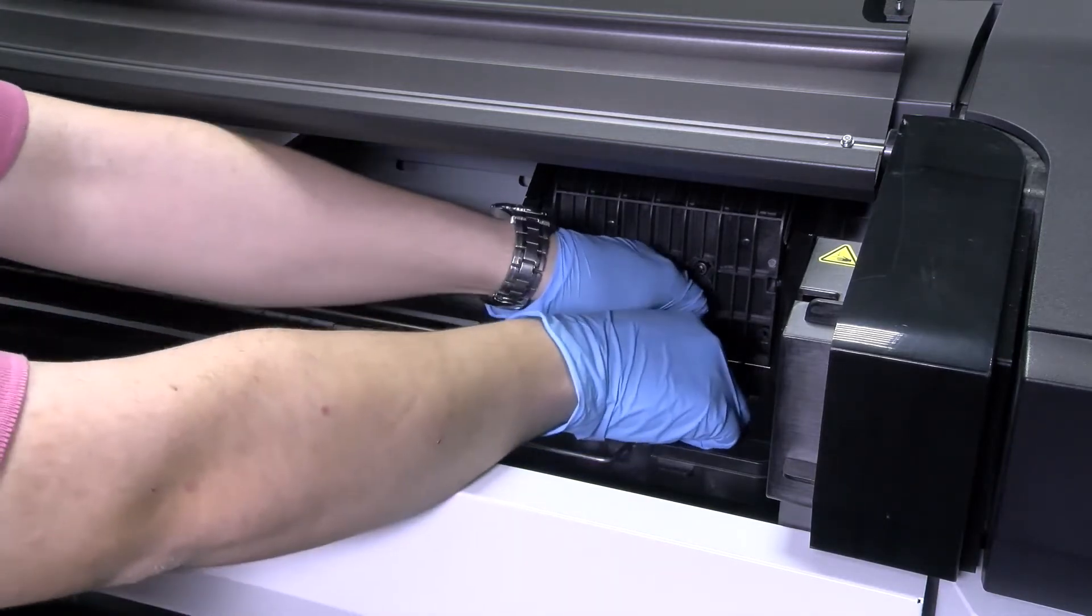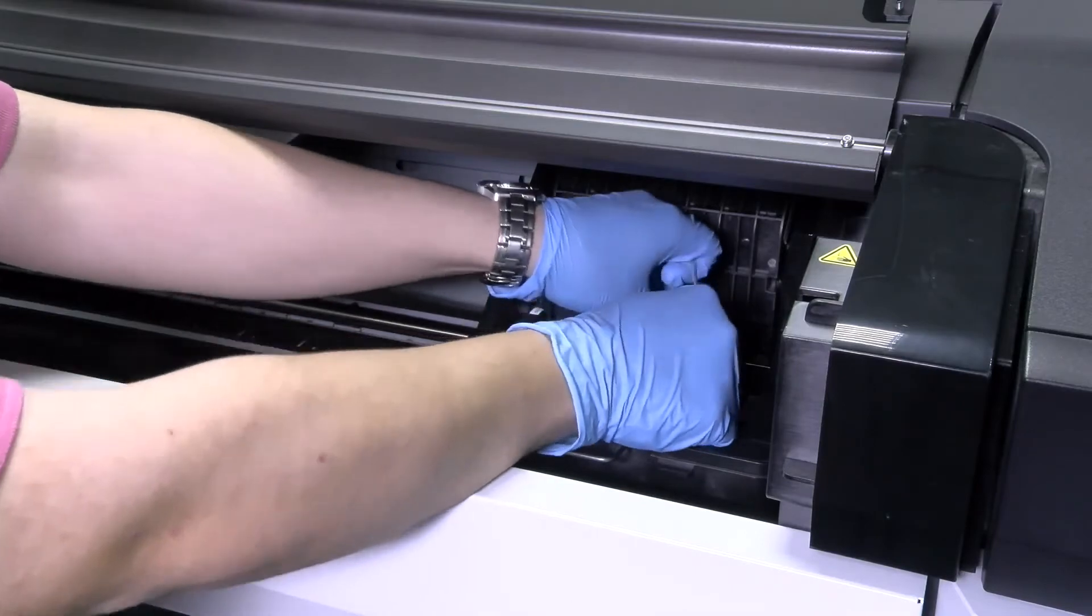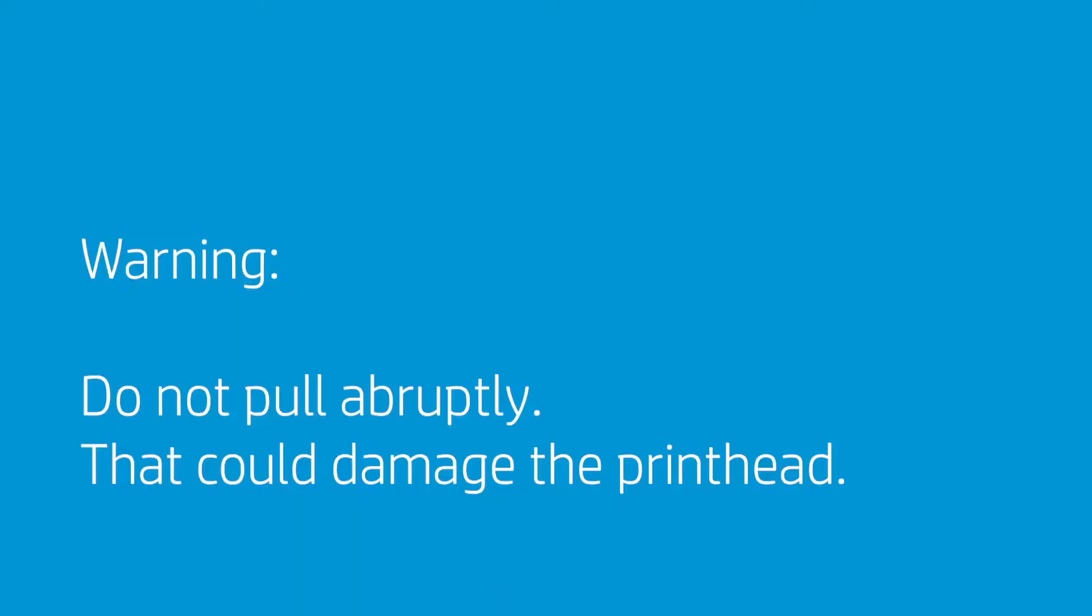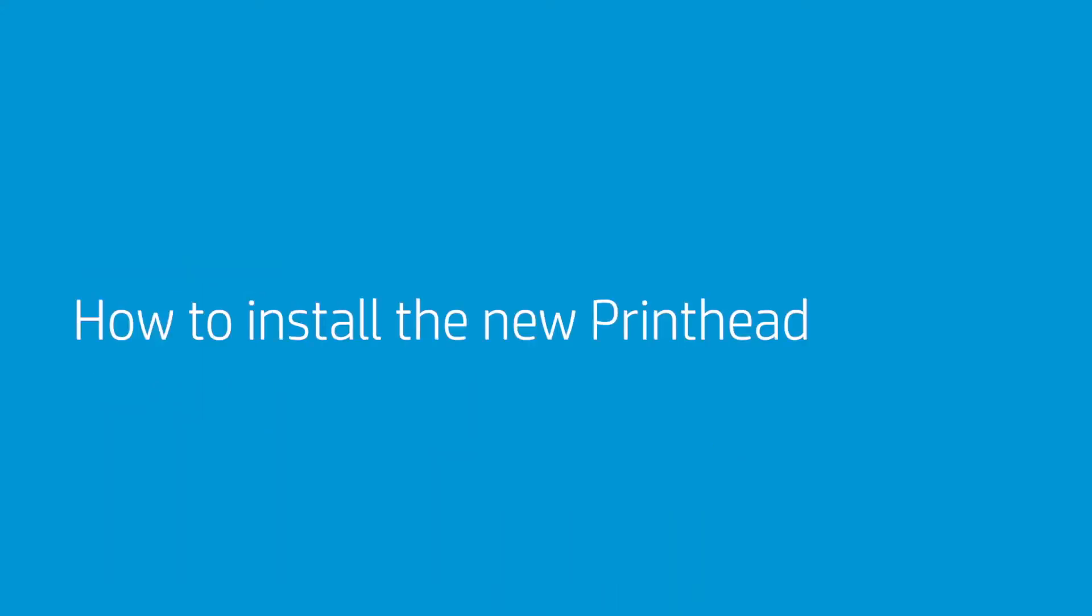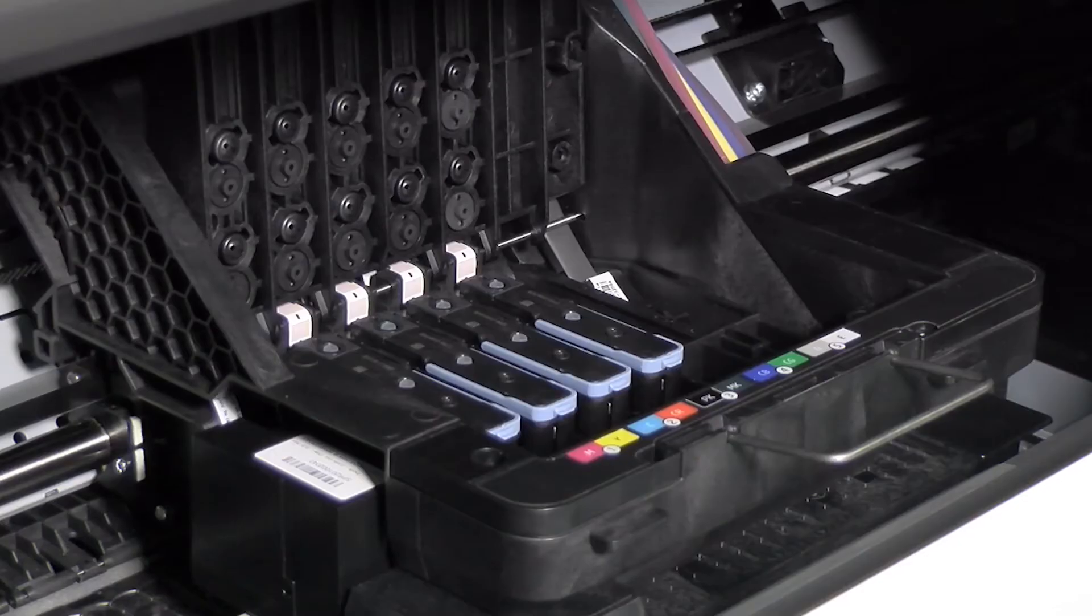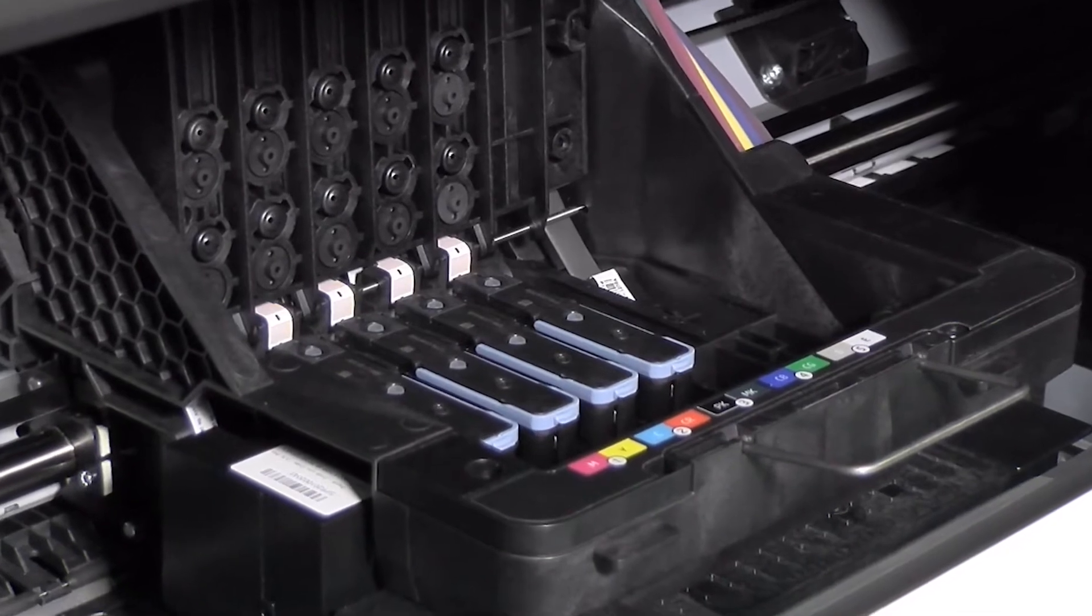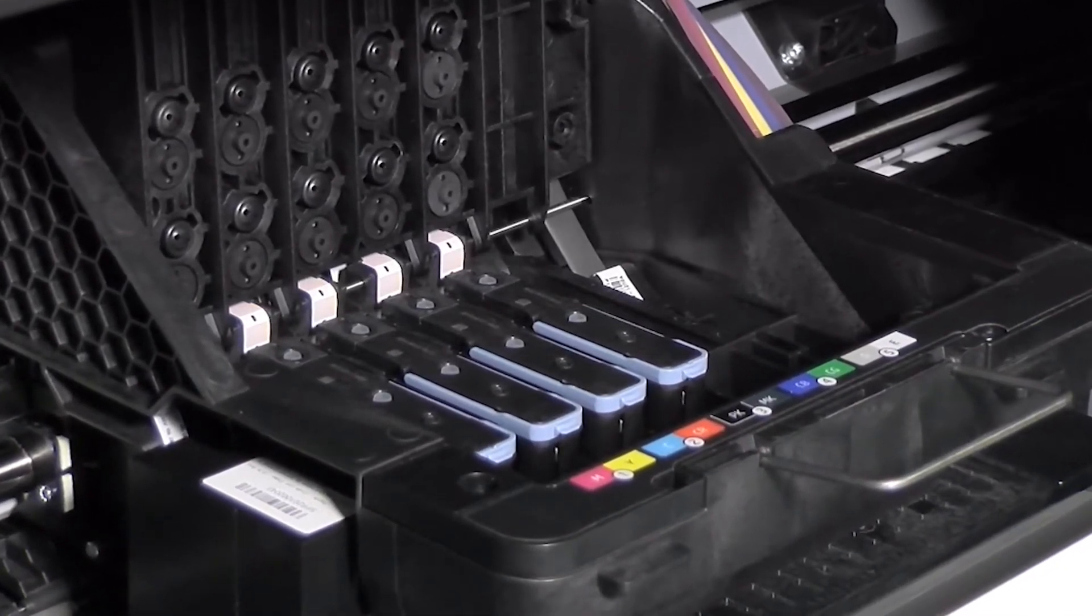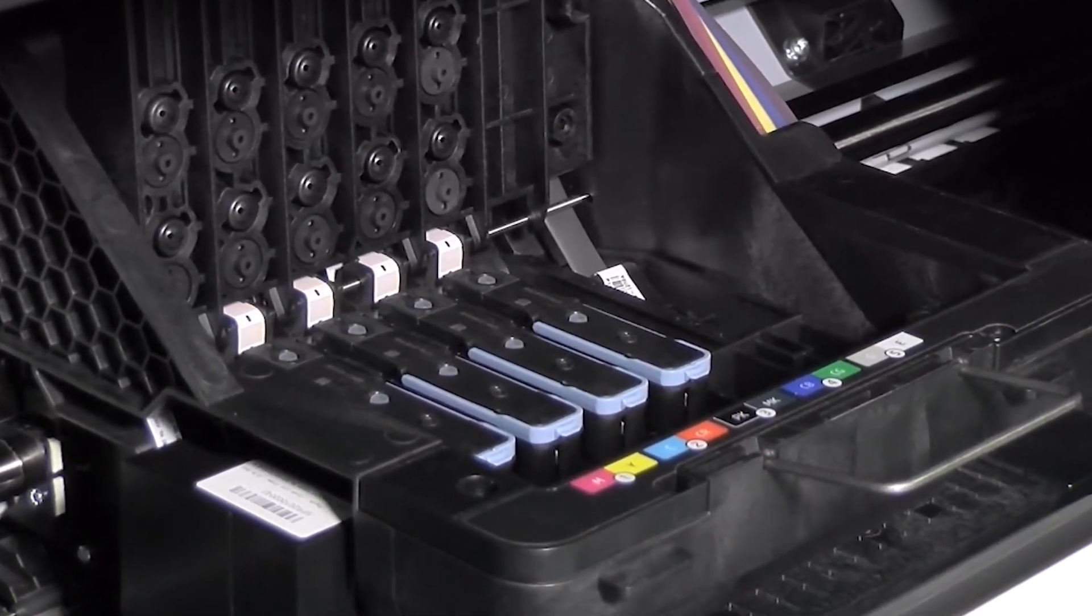Gently pull it upwards until the printhead is released from the carriage. Do not pull abruptly as that could damage the printhead. How to install the new printhead: the printhead is designed to be inserted into any available slot, but once the printhead has been inserted into a slot, it will only work with that combination of colors.